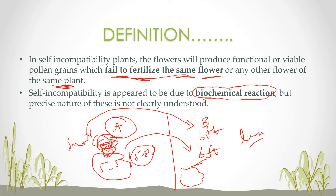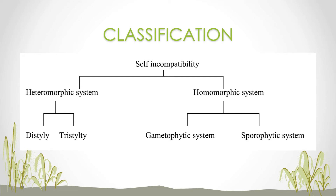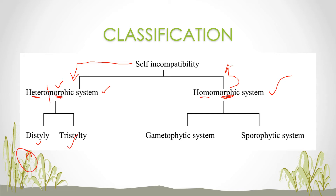Self-incompatibility is classified into two systems: the heteromorphic system and the homomorphic system. In the heteromorphic system, incompatibility is mainly due to differences in the morphology — the appearance or phenotype — of the flowers. In the homomorphic system, the flowers look the same morphologically, but some other mechanism prohibits compatibility. Heteromorphic is further classified into distyle and tristyle, as already discussed.